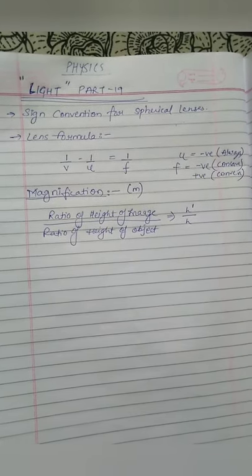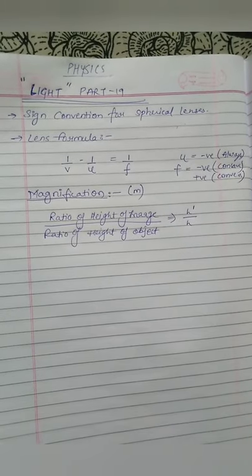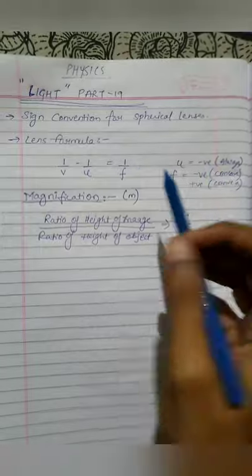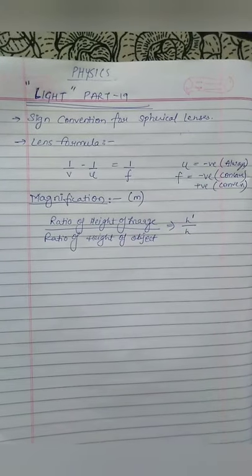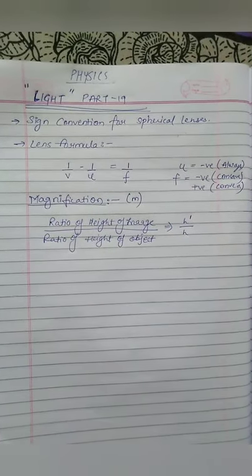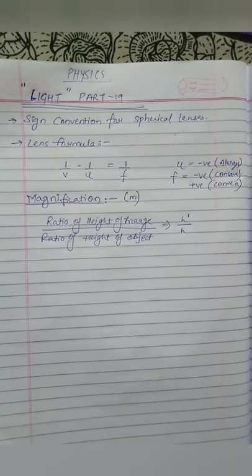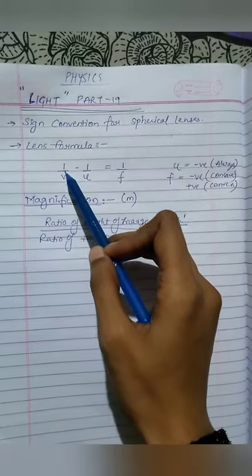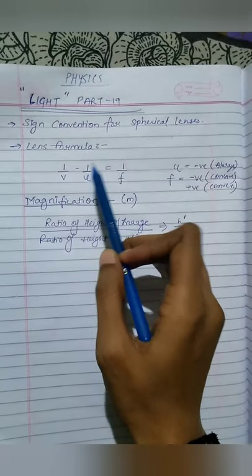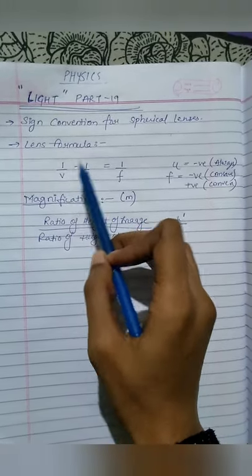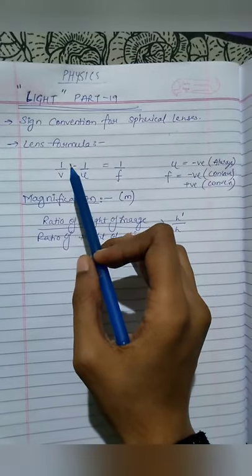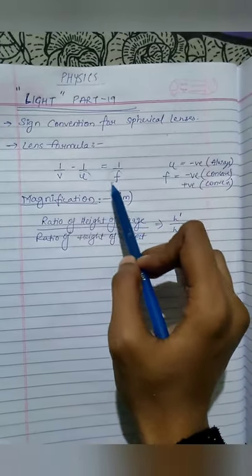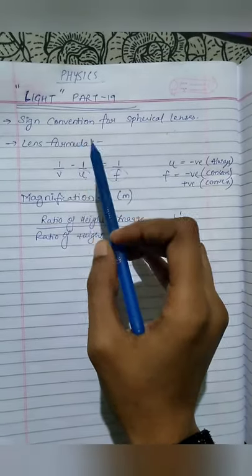The lens formula and mirror formula: in the mirror formula it is 1/v + 1/u = 1/f. The lens formula for image distance is 1/v - 1/u = 1/f. We have to keep attention here that v will always come before u. Here v is the image distance, u is the object distance, and f is the focal length.